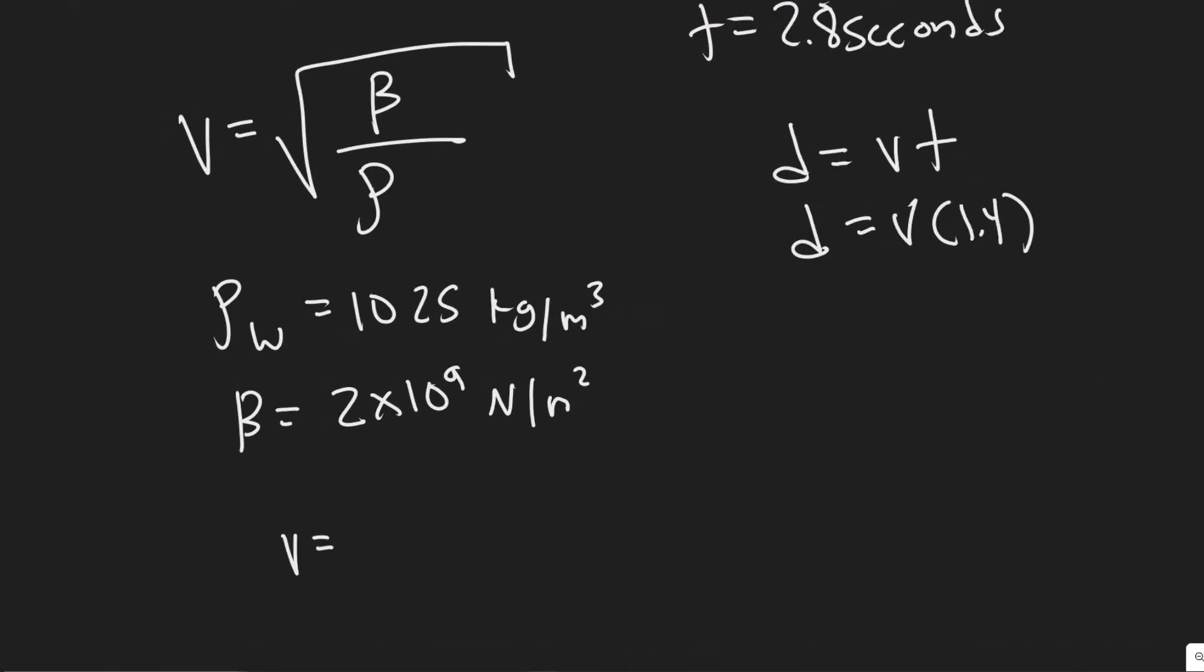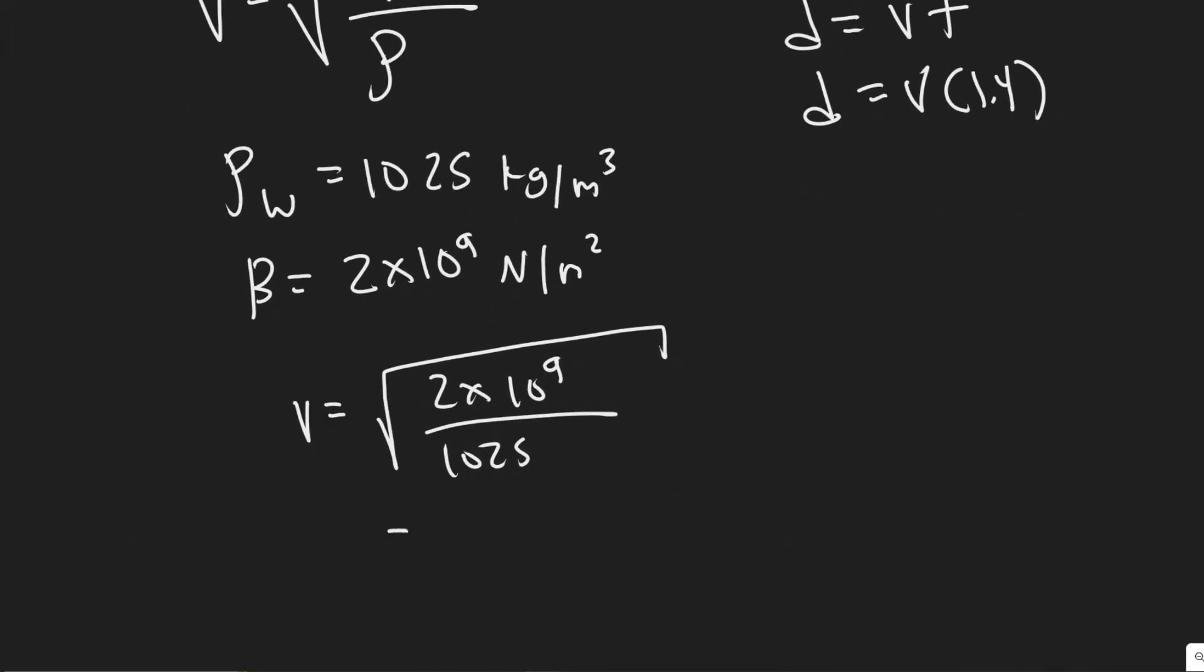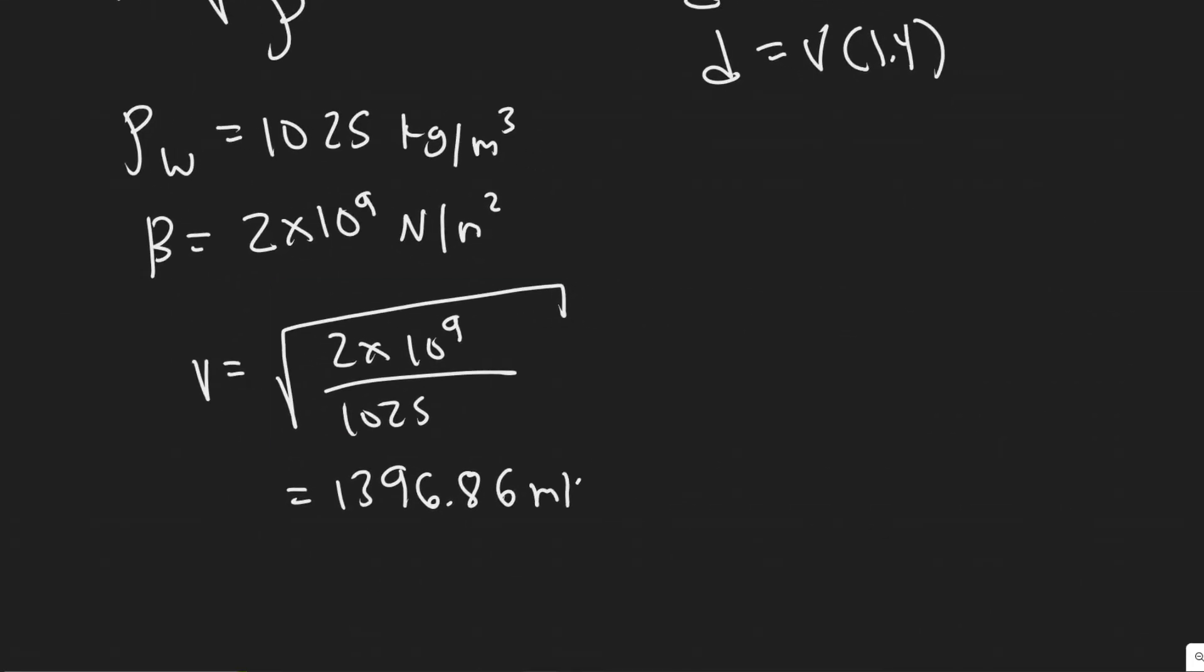What we're going to do is the square root of 2 times 10 to the 9 divided by 1025. So you're going to do the second square root, 2 times 10 to the 9, divided by 1025. You will get a value of 1396.86.